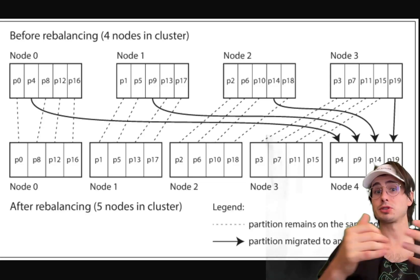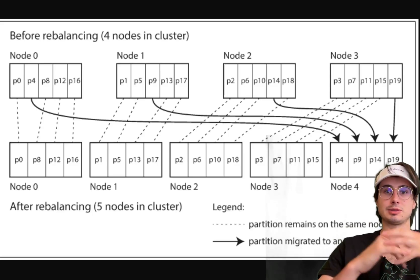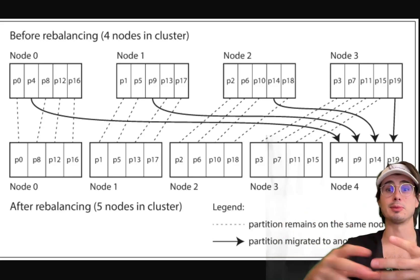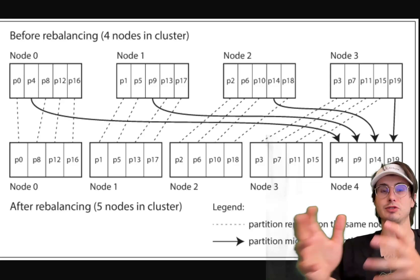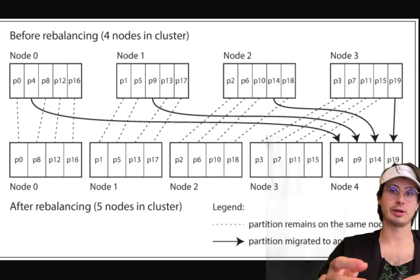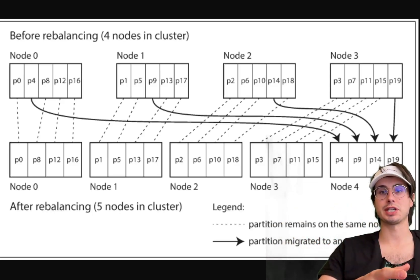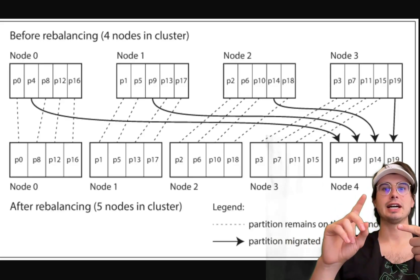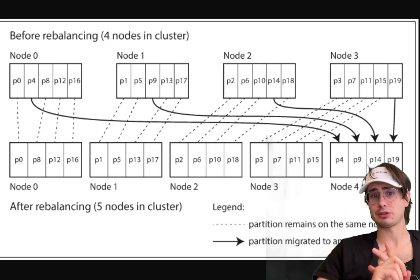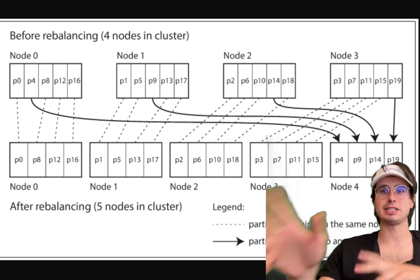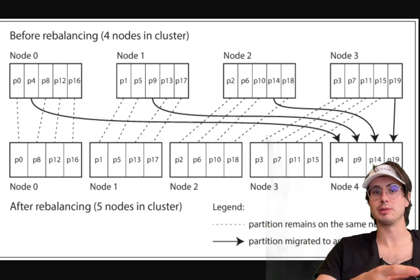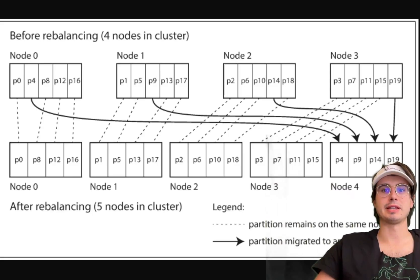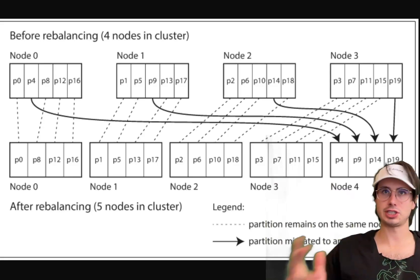You also have request routing. Request routing is the process of directing client requests to appropriate partitions. Effective request routing ensures that your queries are handled effectively and your data retrieval times are minimized. This is where you would use things like consistent hashing, lookup tables or things like directory services as well that can map keys or certain sets of keys to certain partitions.